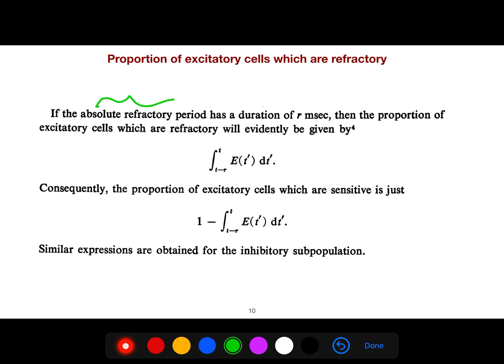If the absolute refractory period has a duration of R milliseconds, then the proportion of excitatory cells which are refractory will evidently be given by this. This is the proportion of excitatory cells. The proportion which are sensitive - they are either refractory cells or they are sensitive. Sensitive is just the opposite of that.